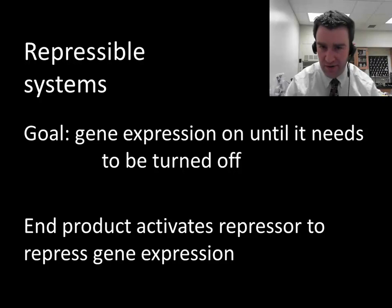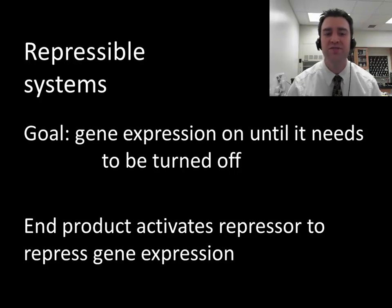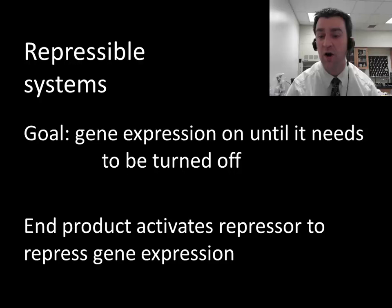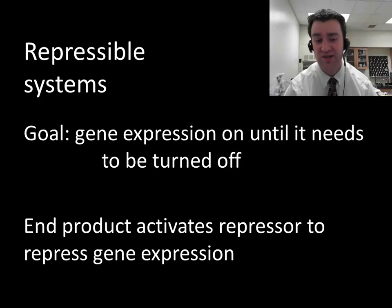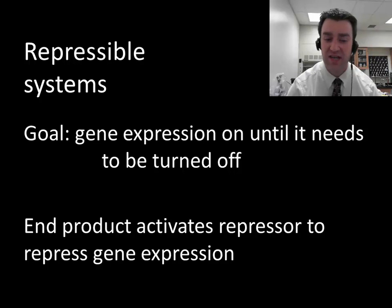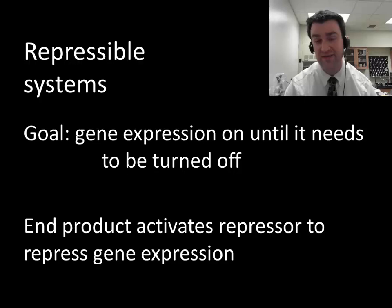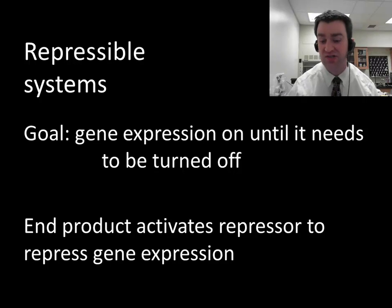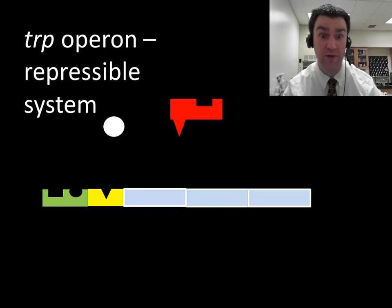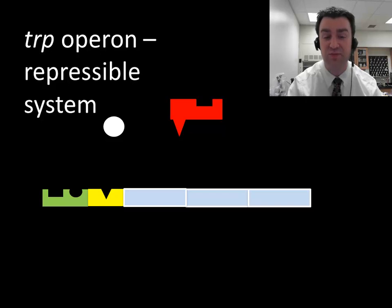The word repress — if you want to repress your feelings, you're turning them off or not showing them. A repressible gene system is where we want expression normally to be on until we want to repress it and turn it off. What we're going to see is that oftentimes the end product created by the proteins that we're expressing by copying these genes — that end product itself is often what activates the repressor transcription factor to actually turn gene expression off. These operons are extremely famous because they were kind of the first examples showing the regulation of gene expression.